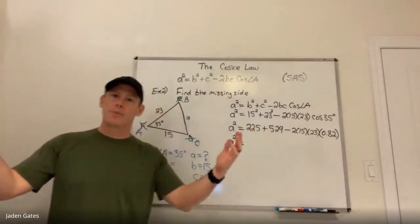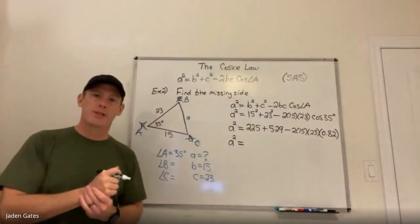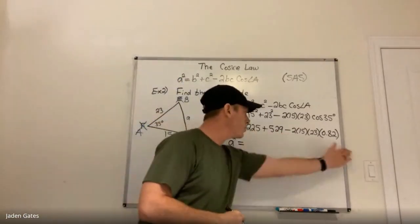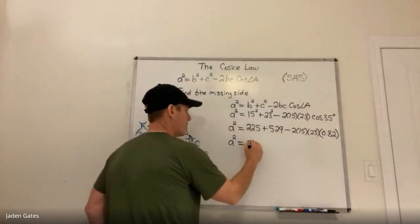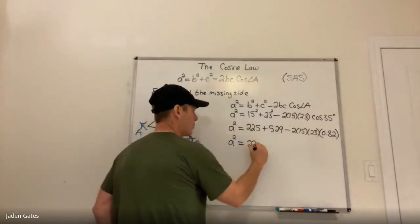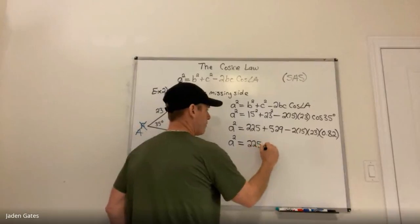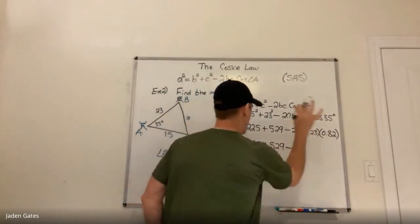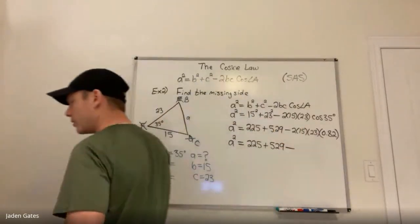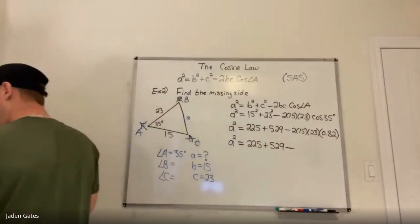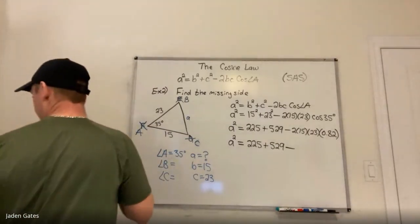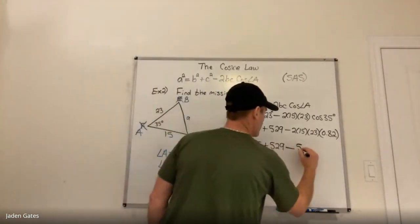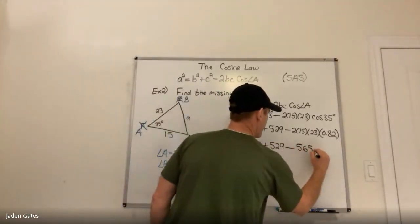This is the spot where everyone makes a mistake — you've got to follow BEDMAS, so I multiply my four numbers first. So I have 225 plus 529, minus — multiplying all four numbers — gives me 565.8.